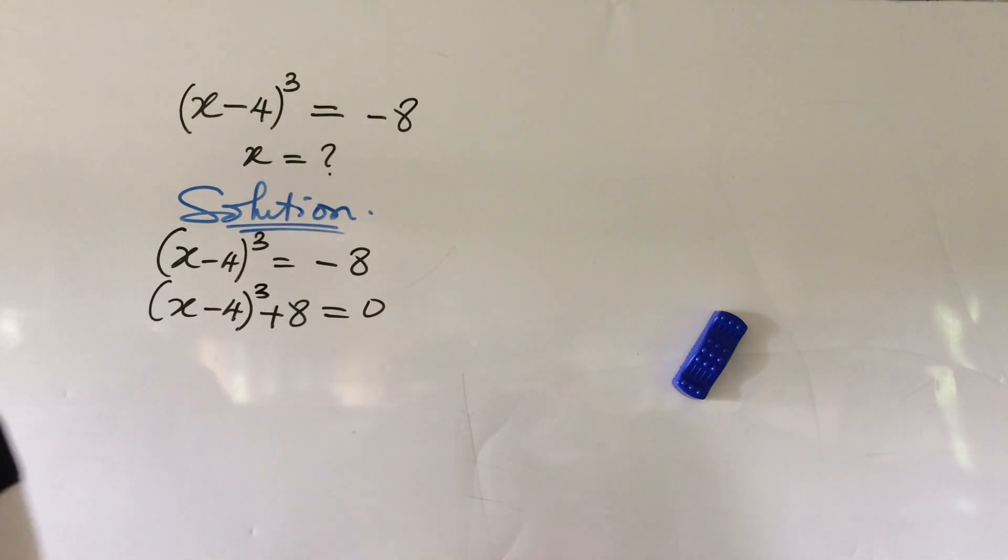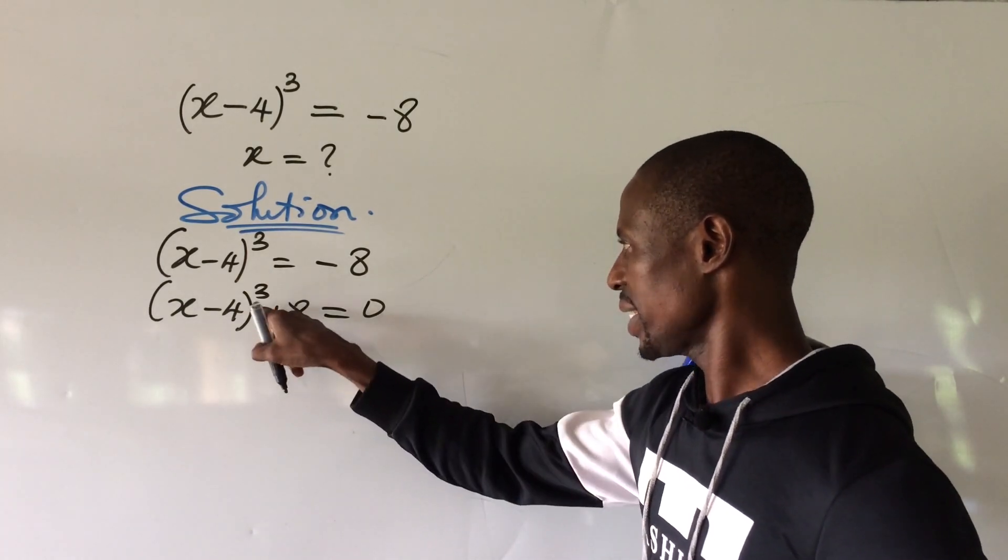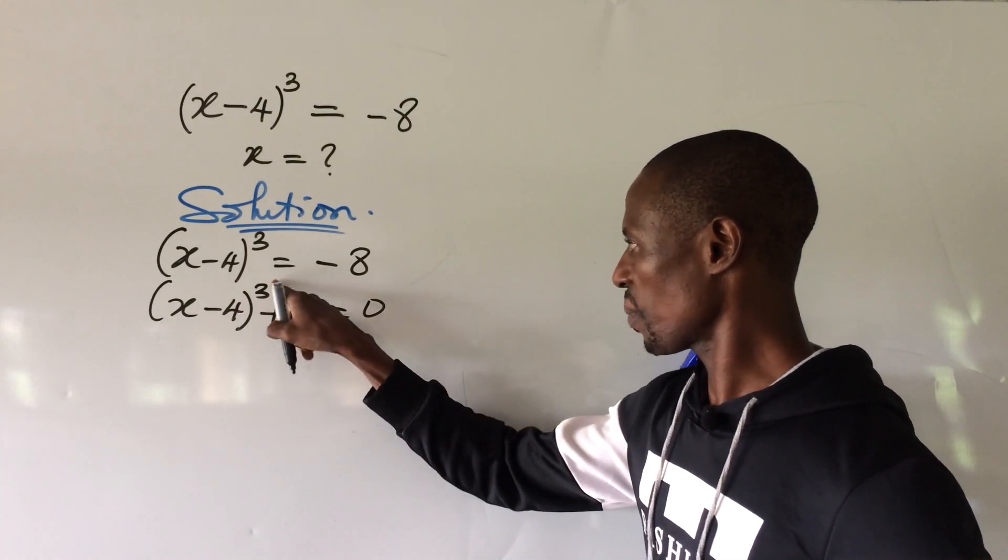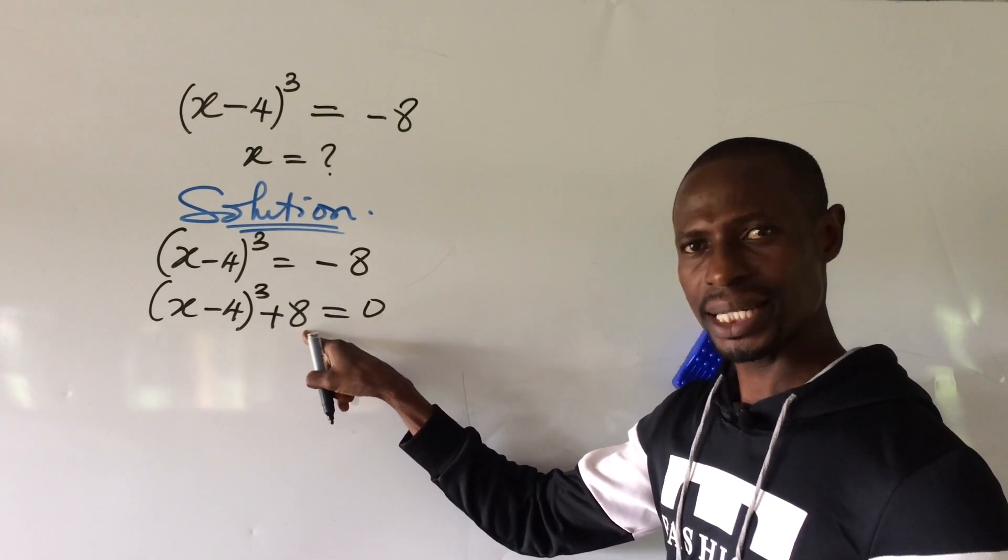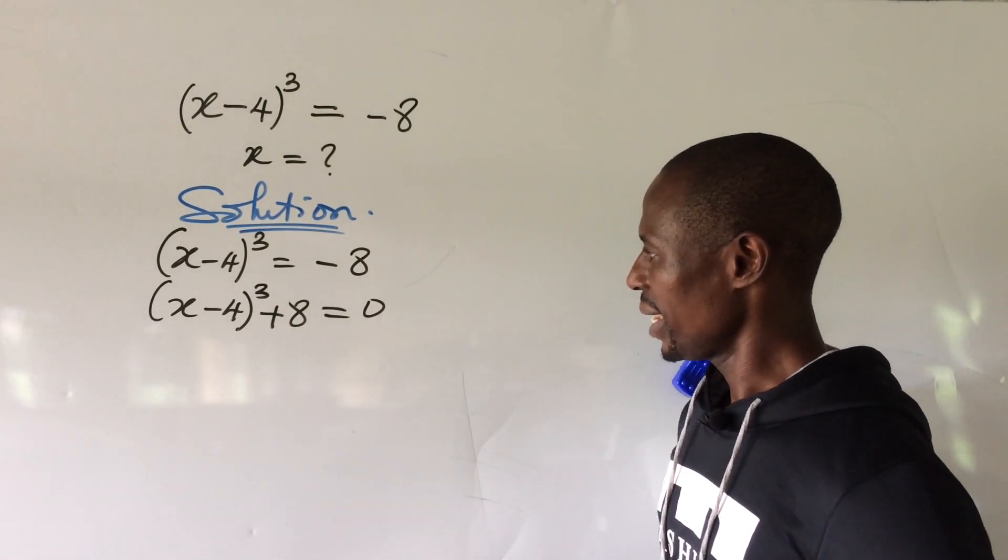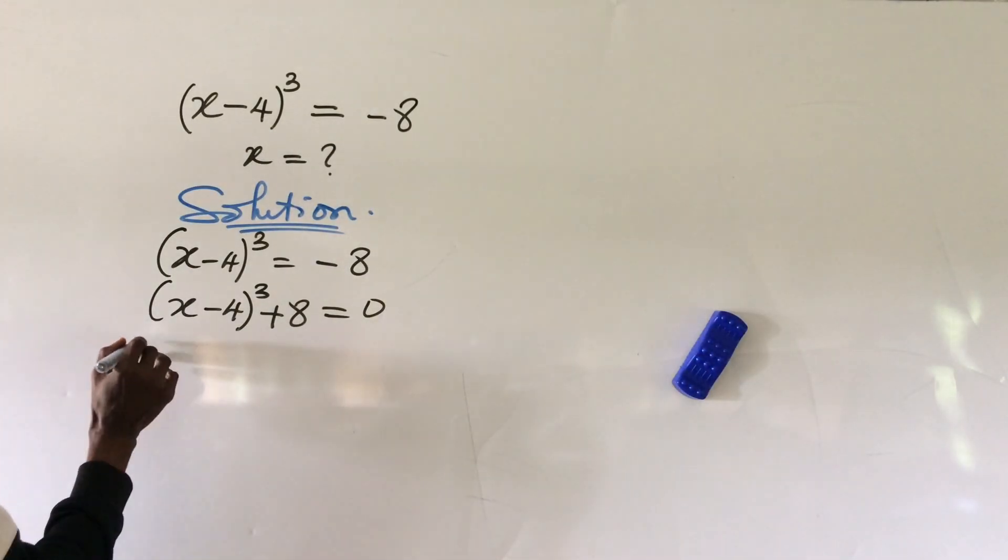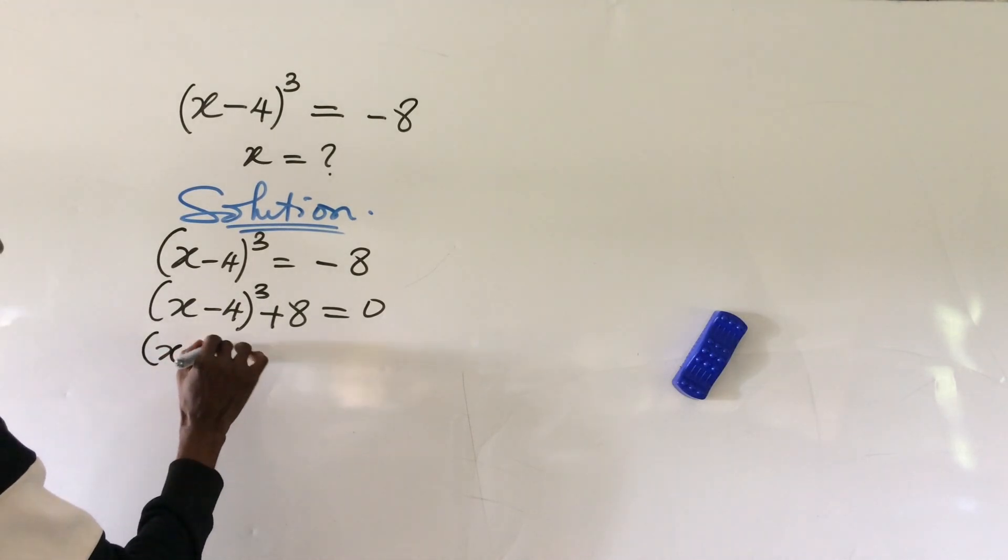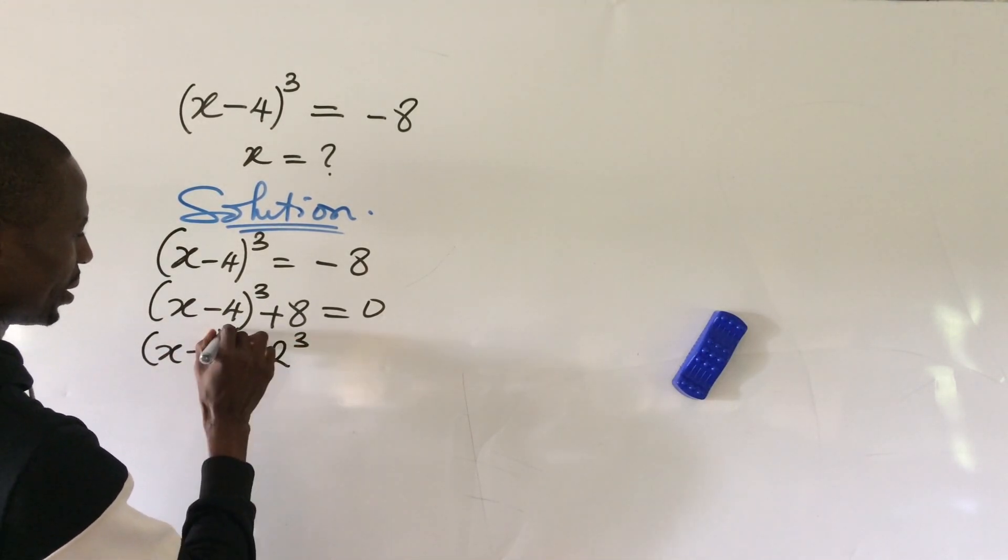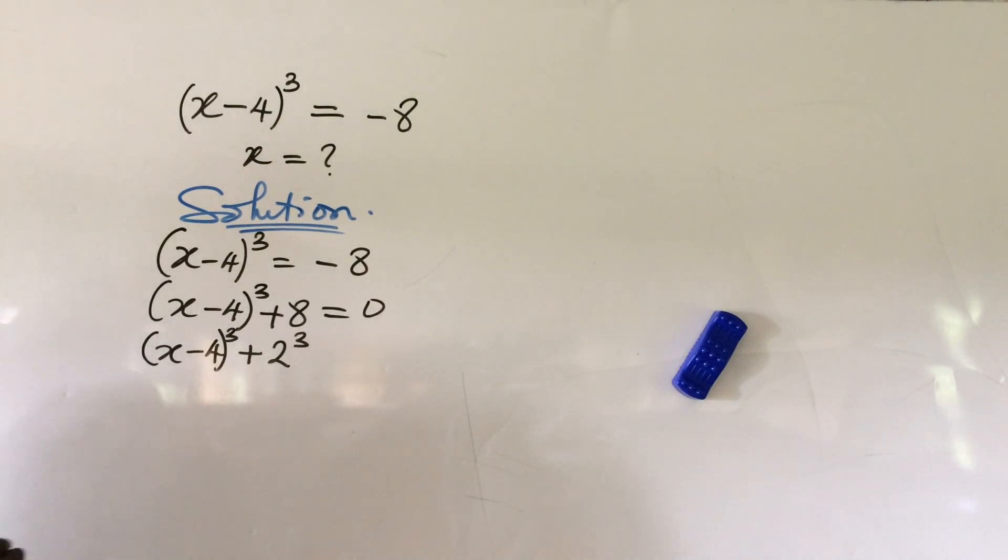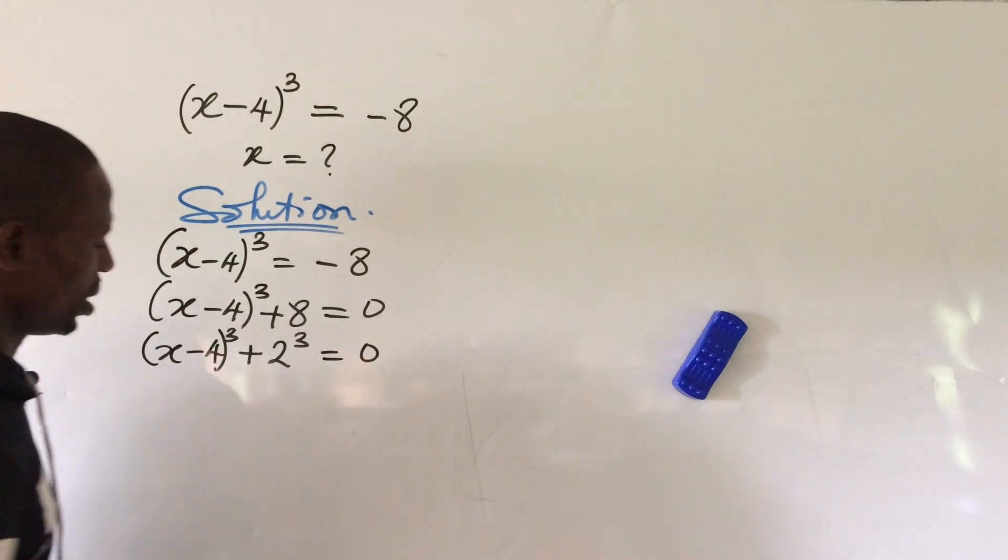So this will now give us (x-4)³ + 8 = 0. Okay, let's put our power of 3 here. Now we look at this. Because this part is raised to power of 3, so we think of a way of rewriting this 8 here. 8 can be written as 2³. So this will now give us here (x-4)³ + 2³ equal to 0.